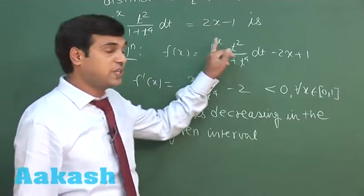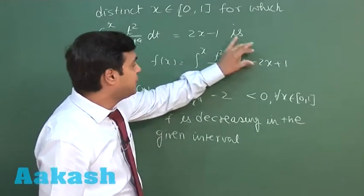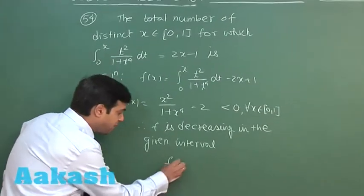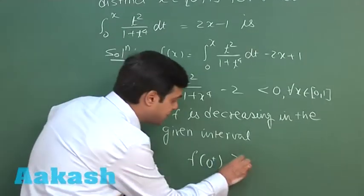Now, when x is approaching to 0, I can see the value of the function is approaching to 0 minus 0 plus 1, meaning f of 0 when approaching to 0 say from the positive side, this is always positive.